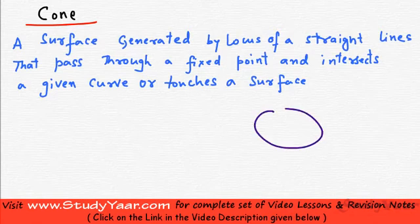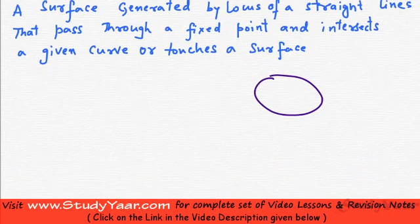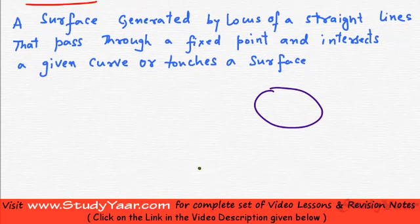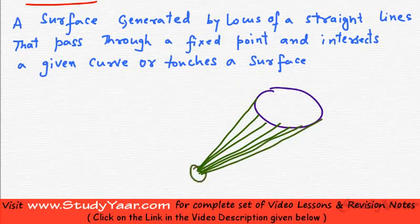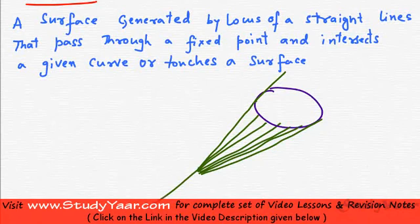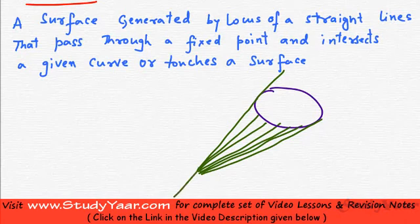Let's assume I have a curve and a fixed point. My cone is the locus of straight lines that intersect this curve and pass through this point — something like this. This is the set of all lines that pass through this fixed point and intersect the given curve. Note that a line doesn't have bounds, so it extends in both directions. I've shown you just a part of this cone.